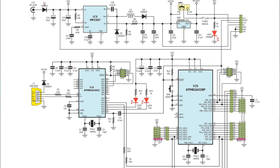Here we have diode D1, and next to it we have a capacitor — this is an electrolytic or polarized capacitor. The black line is connected to the ground and of course here we have the plus. All these dots mean a connection, and this line goes directly to this connection point.